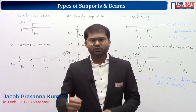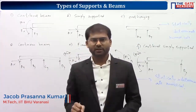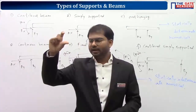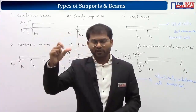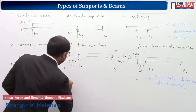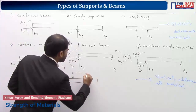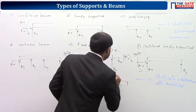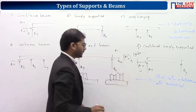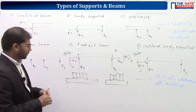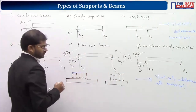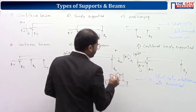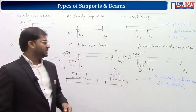To summarize the load types: uniformly distributed load means intensity is constant; uniformly varying or varying distributed load means intensity increases linearly along the length. We can also have loads where intensity varies in a non-linear, curved fashion along the length.